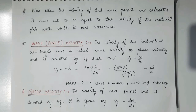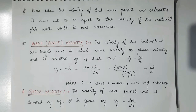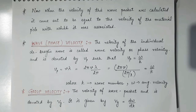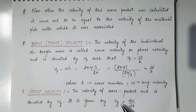Next is group velocity. As the name indicates, it is the velocity of the wave packet — the velocity of the group of waves associated with the material particle moving with velocity v. It is given by Vg, which is equal to d omega by dk.